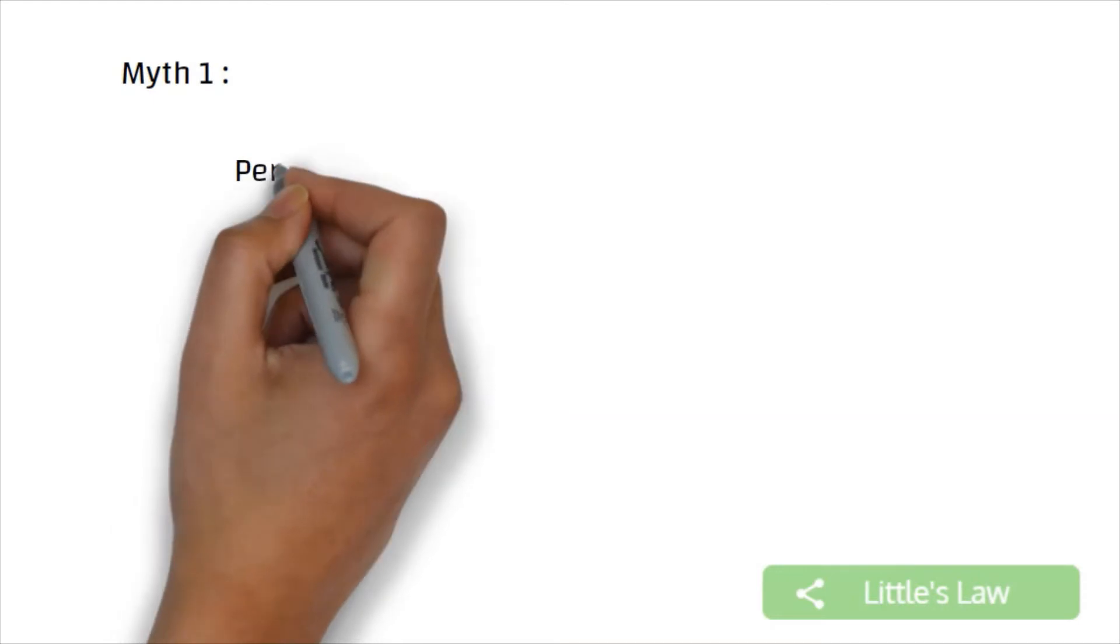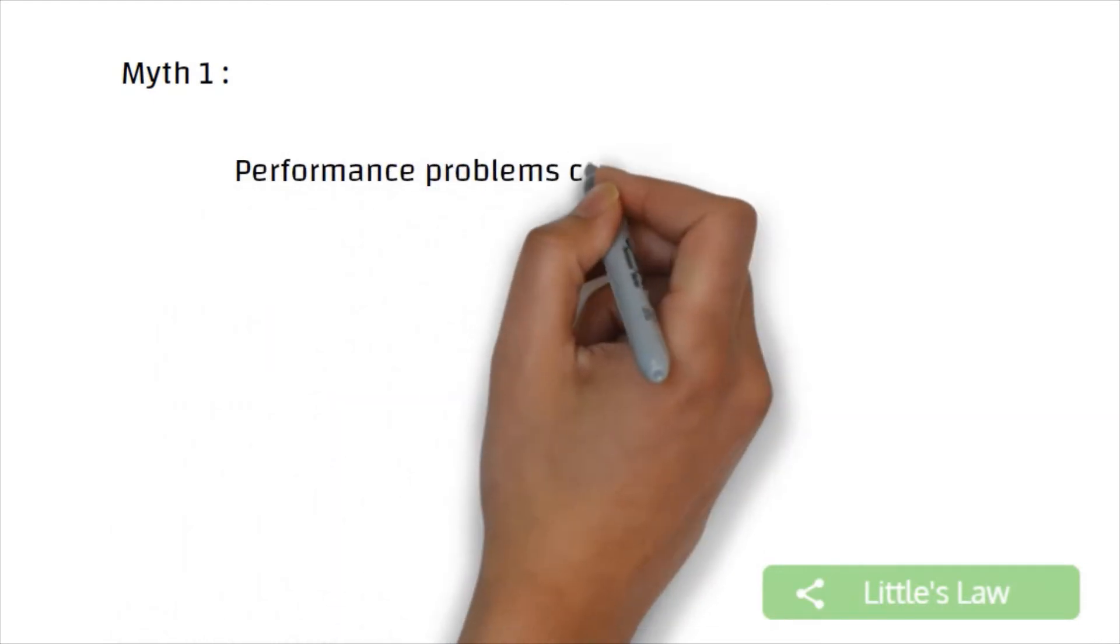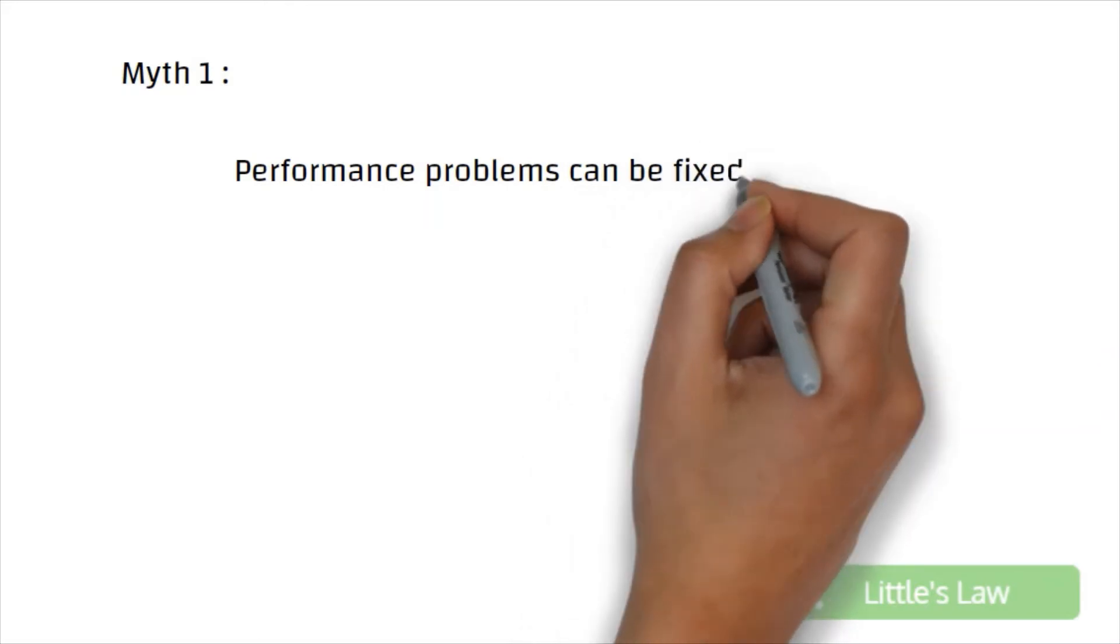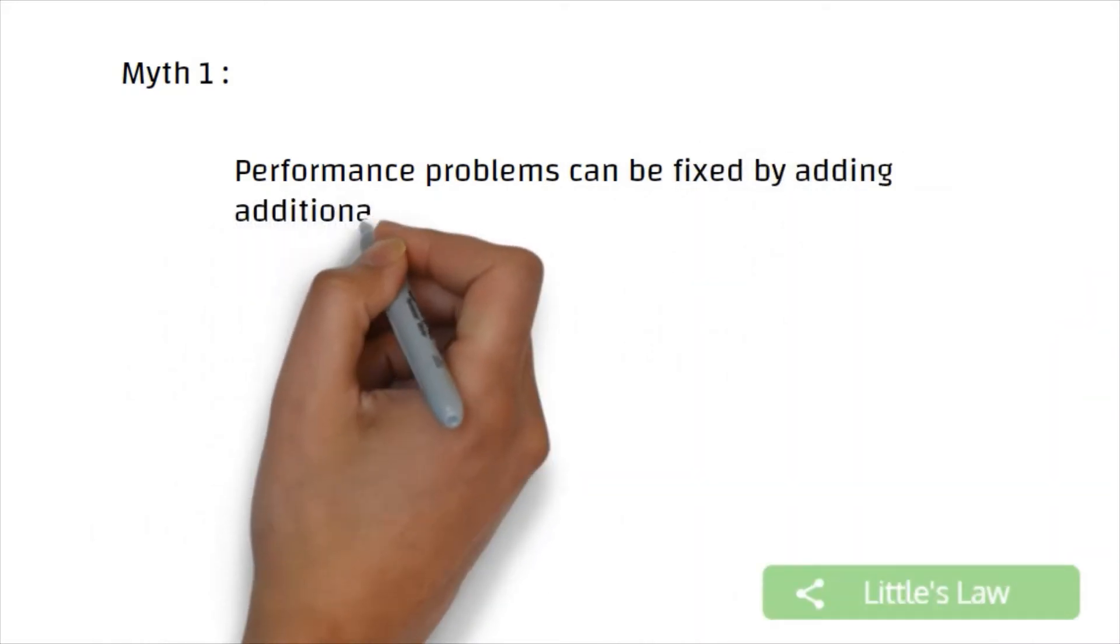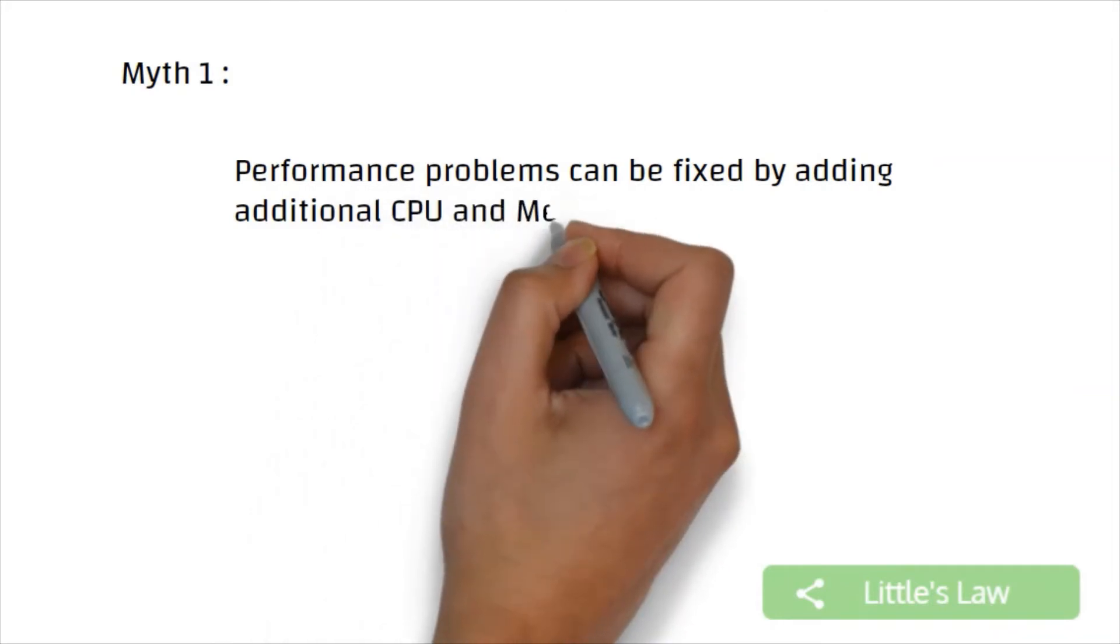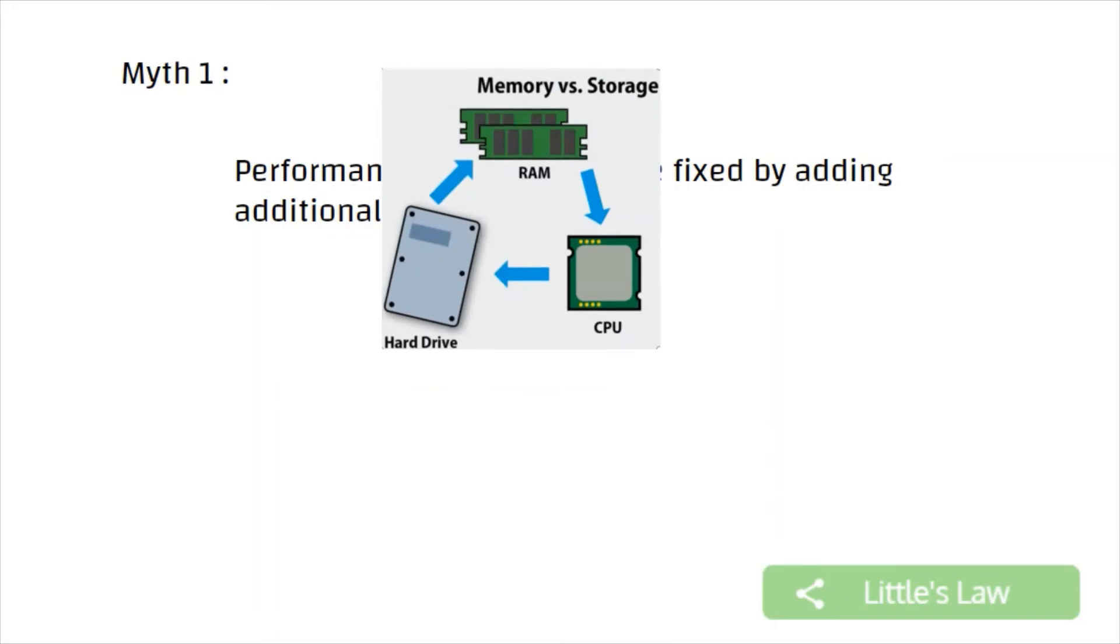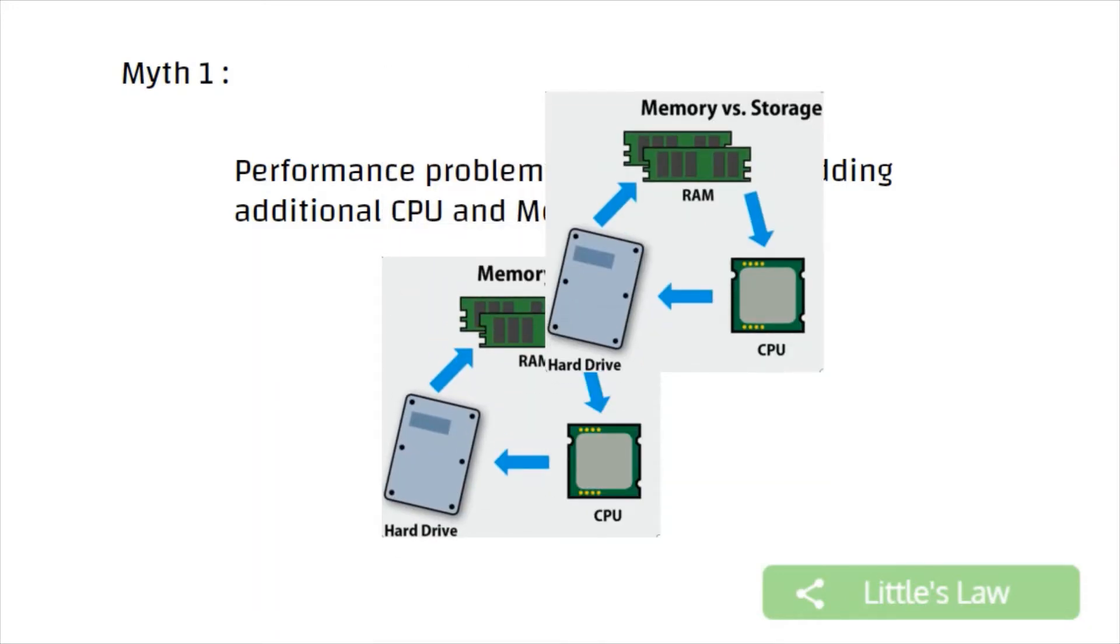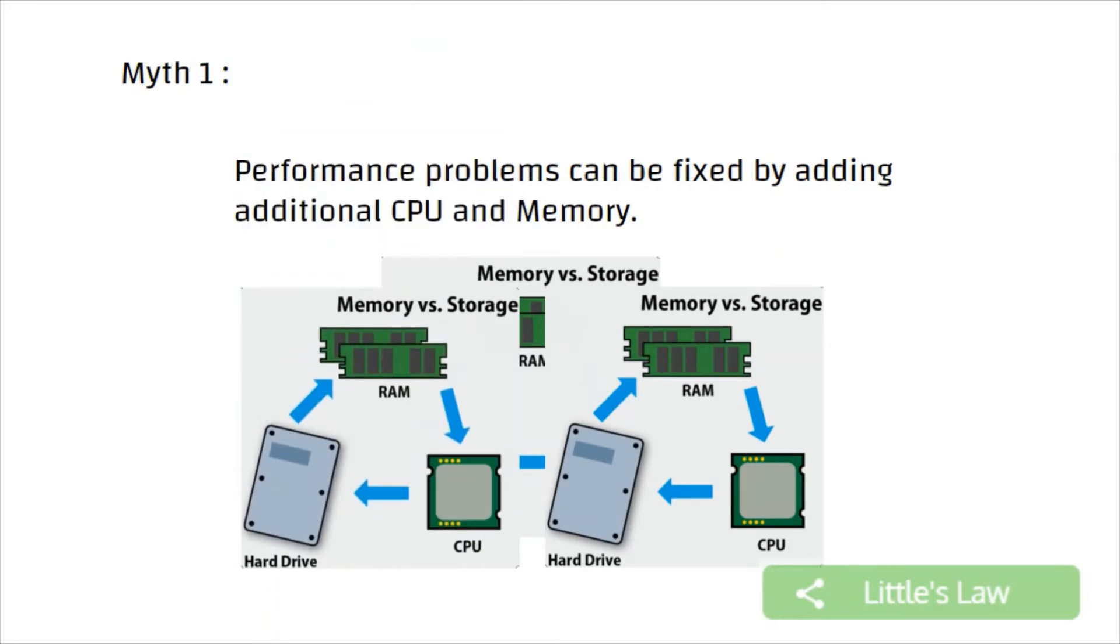Myth one: Performance problems can usually be fixed by simply adding extra hardware like CPU or memory. Is that true? Will adding a RAM or a CPU help us fix these performance problems? Let us break them one by one.